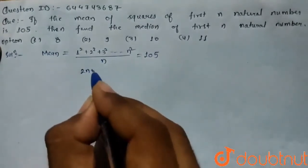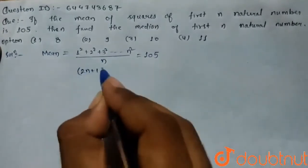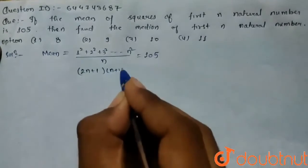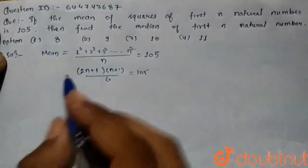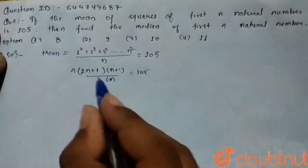n(2n+1)(n+1)/6 equals 105. Simplifying the equation, it becomes...